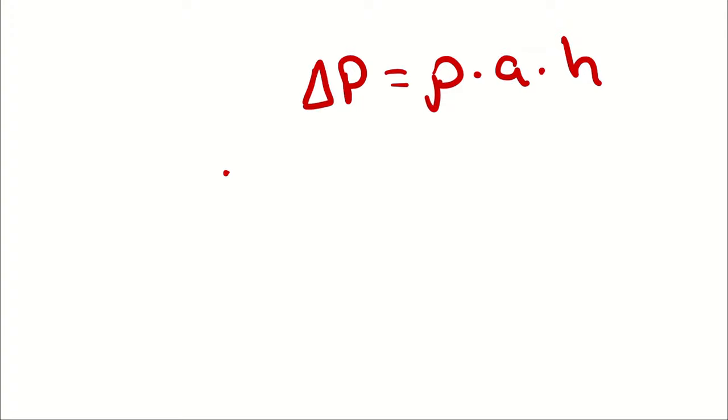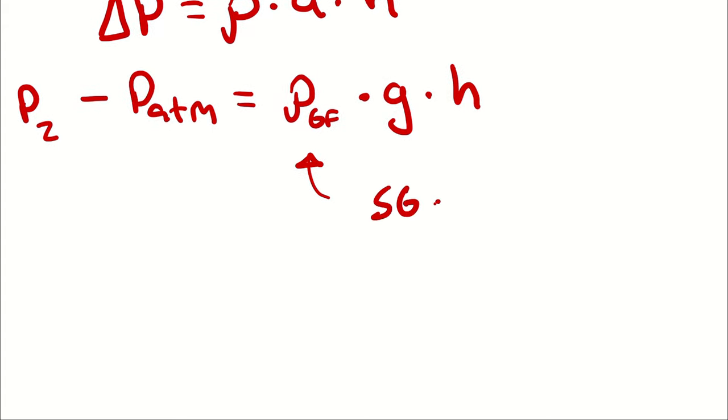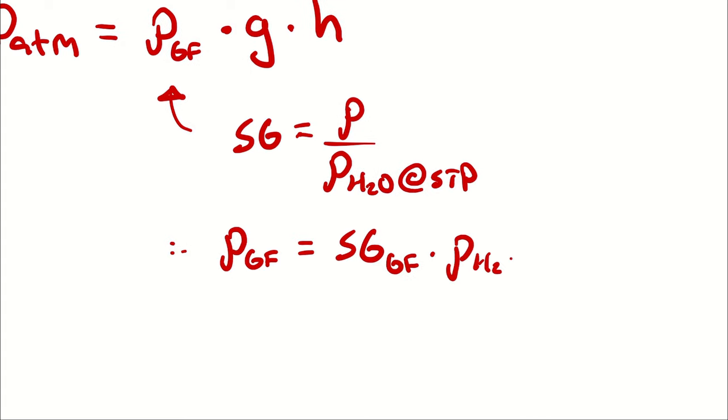We can write P2, which is equal to P1, minus atmospheric pressure, is equal to the density of the fluid. I'm going to abbreviate that GF for gauge fluid, times the acceleration it's experiencing, which I'm assuming is standard gravity, times the height, which is 55 centimeters. I'm going to make the substitution from specific gravity. Remember that specific gravity is going to be the density of our gauge fluid, divided by the density of water at standard temperature and pressure. Therefore, the density of our gauge fluid is going to be the specific gravity of our gauge fluid, multiplied by the density of water at standard temperature.